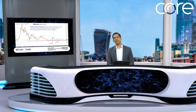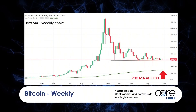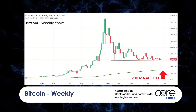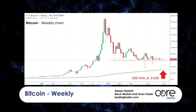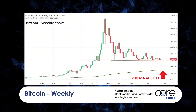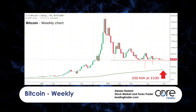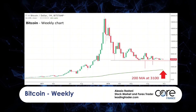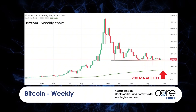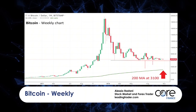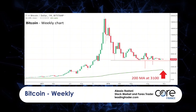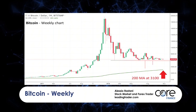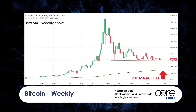Moving to the next chart — this is on a weekly timeframe. The reason I want to show you this weekly timeframe is because there's a major support level beneath Bitcoin: the 200 simple moving average. That's the green line you see on the chart with a red arrow pointing to it. Right now, the weekly 200 moving average — which is an important level that markets seem to respect — is at 3,100. So that's another level of support we need to bear in mind.